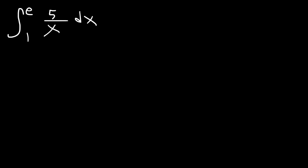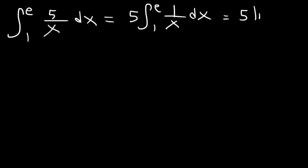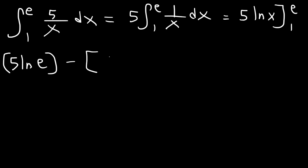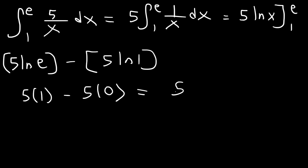Evaluate the definite integral from 1 to e of 5 divided by x dx. Rewrite as 5 times 1 over x, moving the constant to the front. The antiderivative of 1 over x is ln x, so we have 5 times ln x evaluated from 1 to e. F of b is 5 ln e and minus F of a is 5 ln 1. The natural log of e is 1 and the natural log of 1 is 0, so the final answer is simply 5.